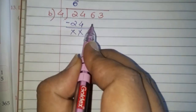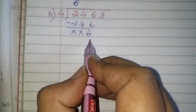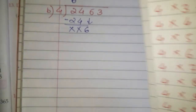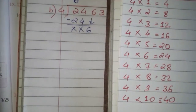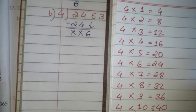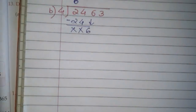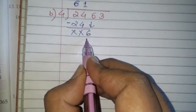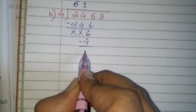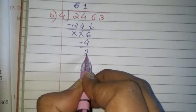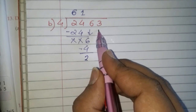4 minus 4 is 0 and 2 minus 2 is 0. We carry down the next number, which is 6. We check if 6 is in the table of 4 — no, 6 is not there. So we find the nearest smaller number, which is 4. 4 ones are 4; we write 1 and subtract: 6 minus 4 is 2, remainder 2.